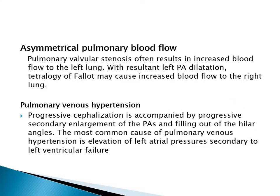Asymmetric pulmonary blood flow: pulmonary valvular stenosis often results in increased blood flow to the left lung, with resultant left pulmonary artery dilatation. Tetralogy of Fallot may cause increased blood flow to the right lung.